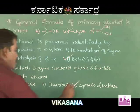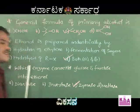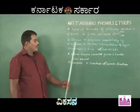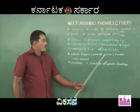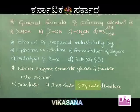So, zymase is the enzyme responsible for conversion of glucose and fructose into ethanol, and that is the correct answer.